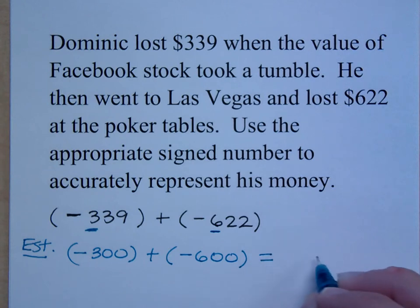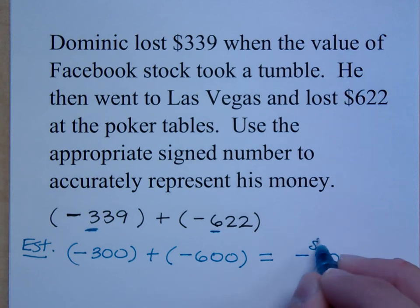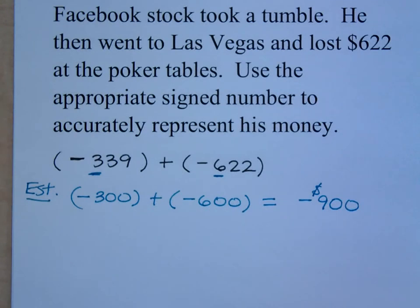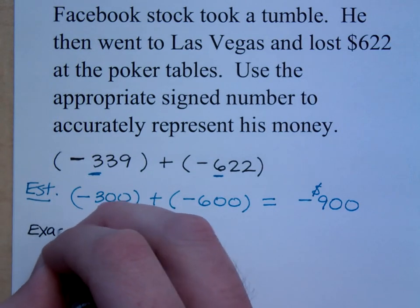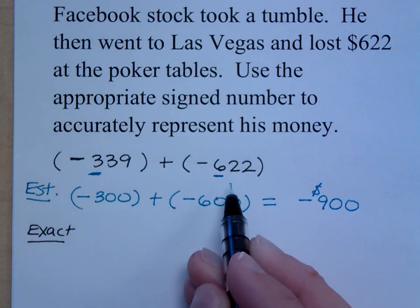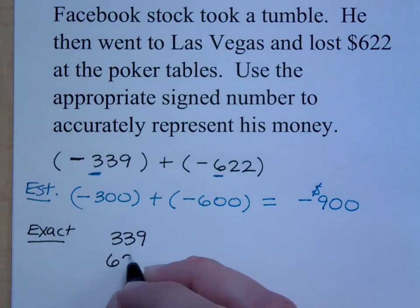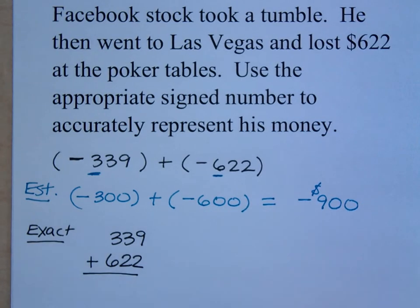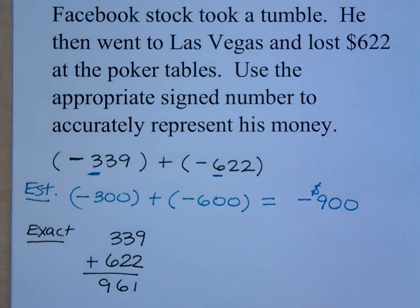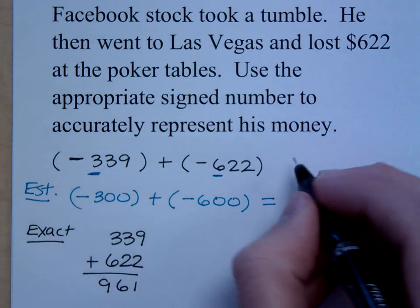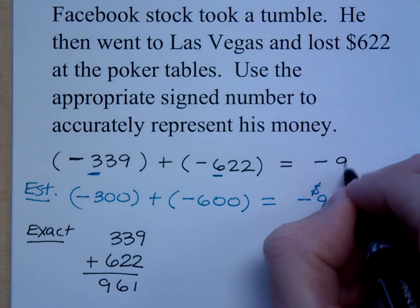So Dominic should be about where? He's lost about $900. Let's find out exactly how much he's lost. Since $339 and $622 are both negative numbers, I'm going to combine those. I'm going to take $339 and $622 and add them. And what did we end up with? Negative $961. Since they were both negative, my exact answer is negative $961.